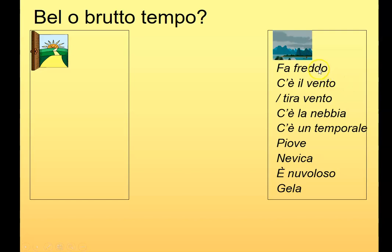Running through in inglese: fa freddo — it's cold; c'è il vento — it's windy; la nebbia — it's foggy; un temporale — it's stormy; piove — it's rainy; nevica — it's snowy; è nuvoloso — it's cloudy; giella — it's freezing. And the good weather phrases: fa caldo — it's hot; remember caldo doesn't mean cold. And c'è il sole — it's sunny.